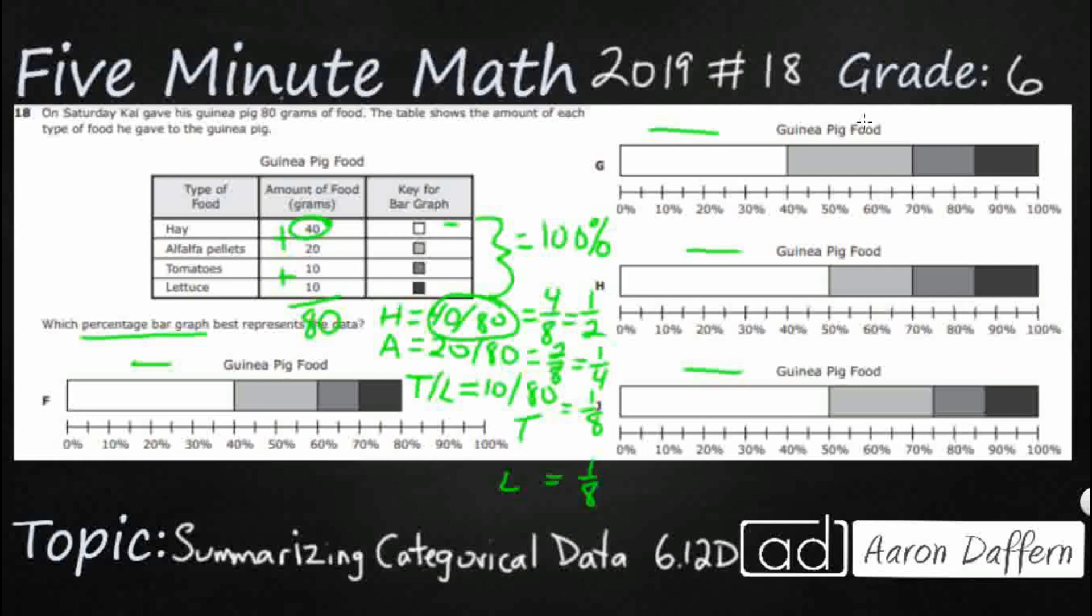So what we need to do now is to turn these into percentages but we can actually help ourselves by eliminating some of these incorrect answers first before we look at all of these as percentages.